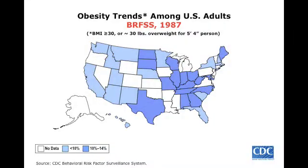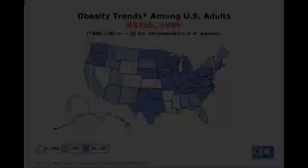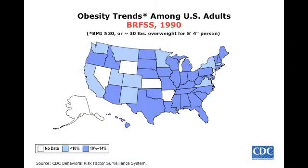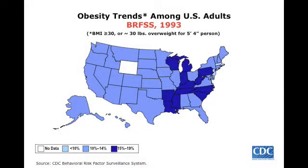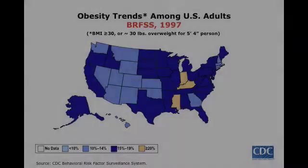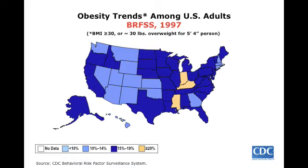From 1986 through 1990, you can see where the majority of states in the country have now reached a prevalence between 10% and 14% of obesity. In 1991, we start seeing some states that have a prevalence rate of 15% to 19%. Continuing through 1992, 1993, 1994, 1995, 1996, and in 1997, we are now seeing some states that have an obesity prevalence greater than 20%.